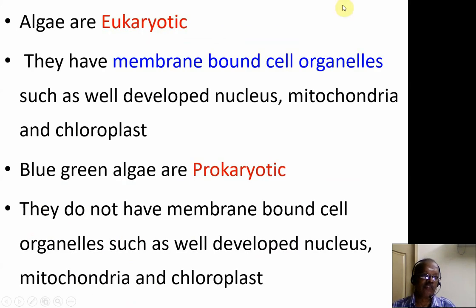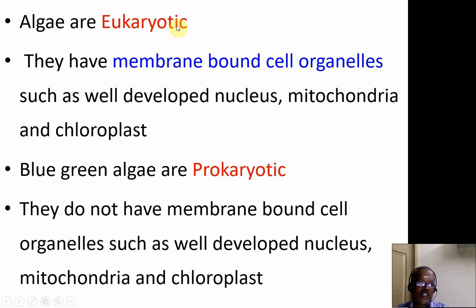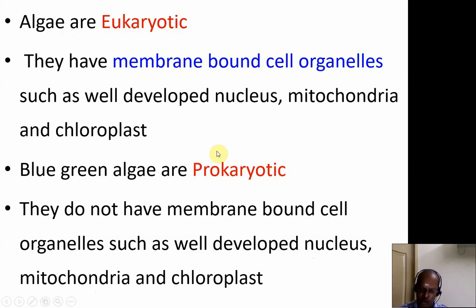Algae are eukaryotic. Eukaryotic organisms have membrane-bound cell organelles such as a well-developed nucleus, mitochondria, and chloroplast. All algae are eukaryotic except blue-green algae. Blue-green algae are prokaryotic because they do not have membrane-bound cell organelles — well-developed nucleus, mitochondria, and chloroplast are absent.